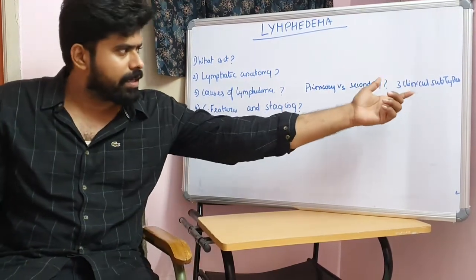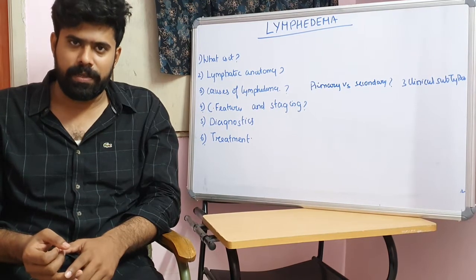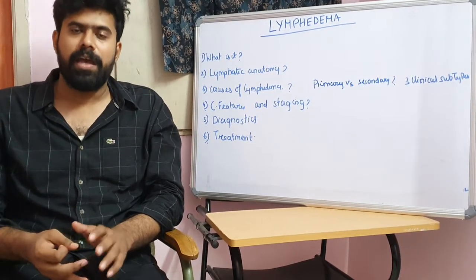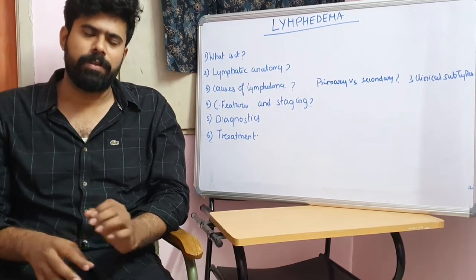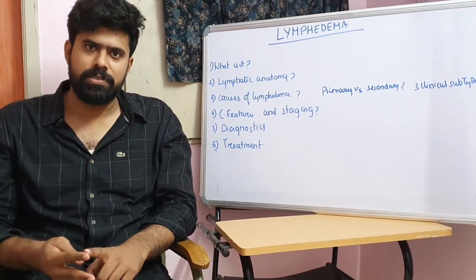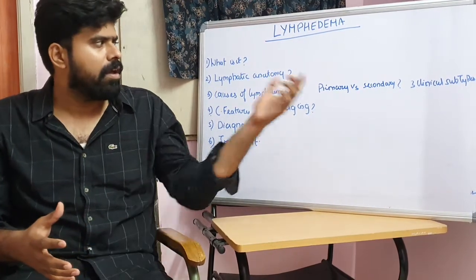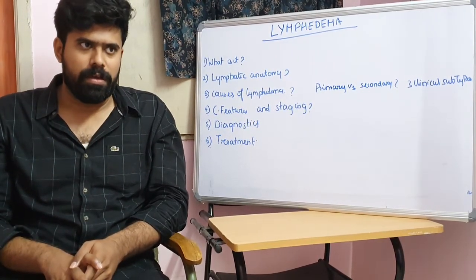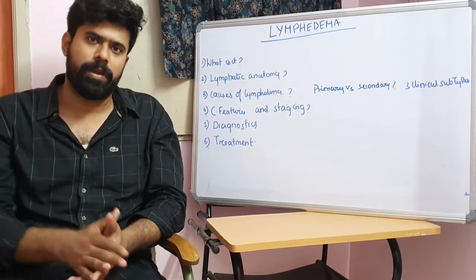Primary lymphedema is more common in females and usually presents in a younger age group under 20 years. If present at birth, it is called congenital lymphedema. If present in the pubertal age group, it is called lymphedema praecox. If present after 35 years of age, it is called lymphedema tarda. Primary lymphedema can be associated with genetic syndromes such as Down syndrome, Patau syndrome, Edwards syndrome, Noonan syndrome, and lymphangiomyomatosis. Two classical syndromes are Milroy disease and lymphedema-distichiasis syndrome, presenting as congenital lymphedema or lymphedema praecox.